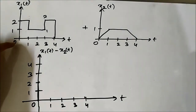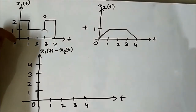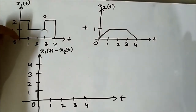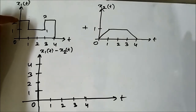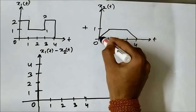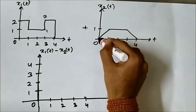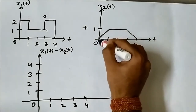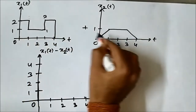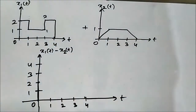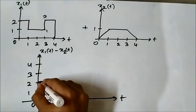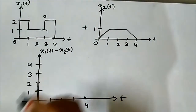At t equals 0, x1(t) has two values — the initial value 0 and the final value 2 — because there is a sharp upward transition. x2(t) has only one value at t equals 0 which is 0. So first 0 minus 0 equals 0, then 2 minus 0 equals 2.